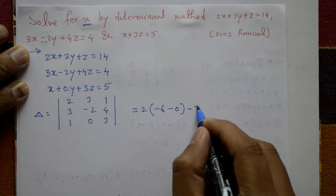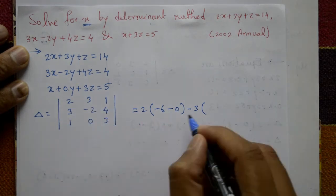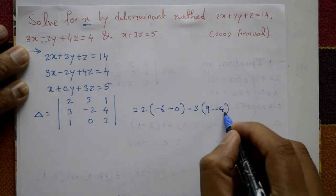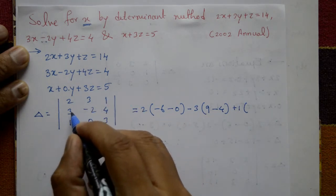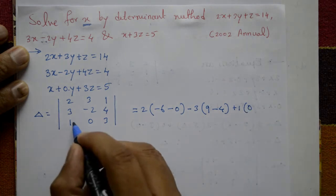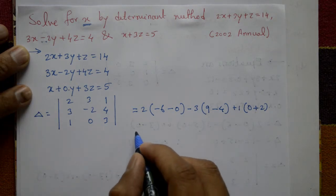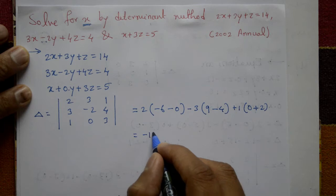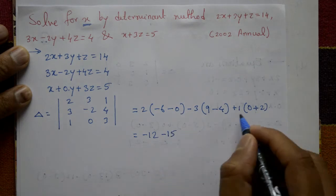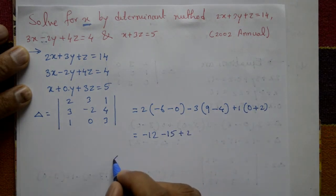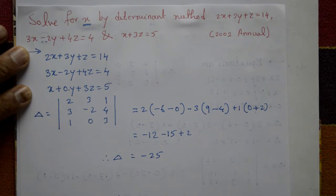Taking 2 times the minor: minus 2 times 3 gives minus 6, minus 0 gives minus 6. Then minus 3 times the minor: 3 times 3 is 9, minus 1 times 4 is 4, giving 5. Then plus 1 times the minor: 3 times 0 minus 1 times minus 2 gives plus 2. So delta equals 2 times minus 6, minus 3 times 5, plus 1 times 2, which gives minus 12 minus 15 plus 2. Therefore delta equals minus 25.